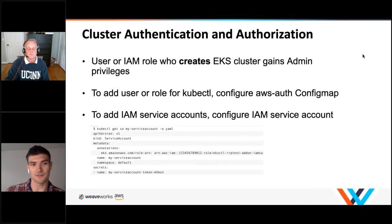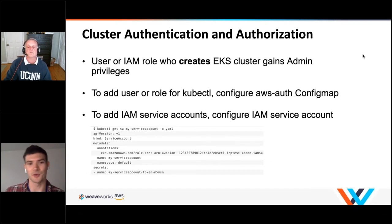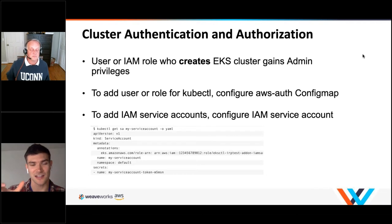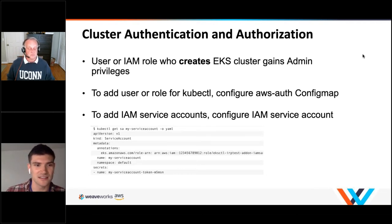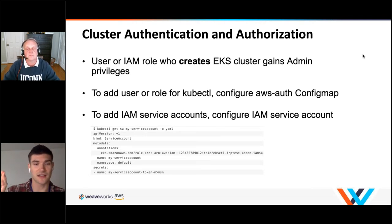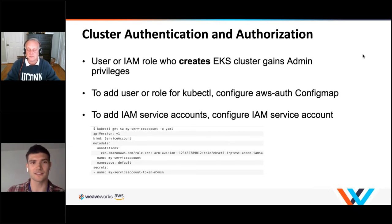When it comes to authorization, here's an example of a service account with a role on it. In the annotations, the key is 'eks.amazonaws.com/role-arn' and the value is the actual role ARN. Anything you attach this service account to will have that IAM permission — that's how it looks in practice.